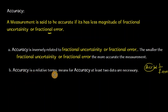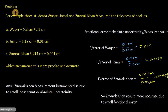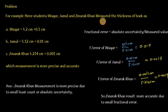Accuracy is also a relative term, meaning at least two data points are necessary to compare accuracy. For example, three students — Waqar, Jamal, and Zmarag Khan — measure the thickness of a book.